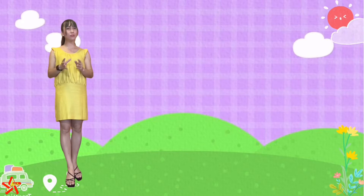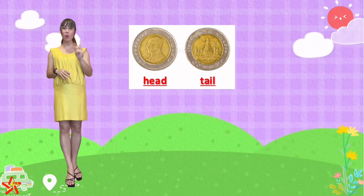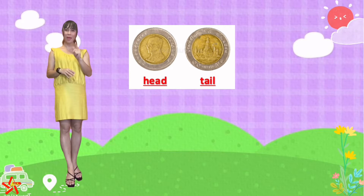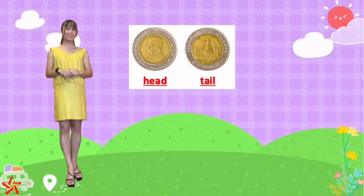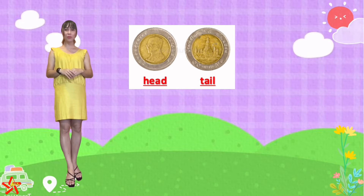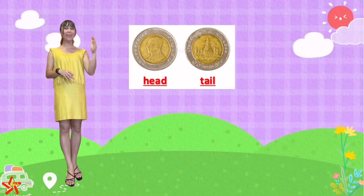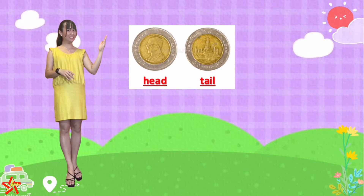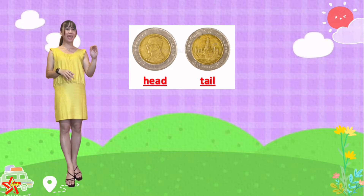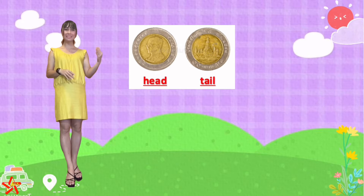Before we start, I would like you to look at these two pictures. Picture number 1 is correct — it's a coin. What is the value or the amount of this coin? It's 10 baht. As you can see, Teacher Isa put two sides of the coin. We have the head and the tail. The head is the front and the tail is the back of the coin. Head, tail.